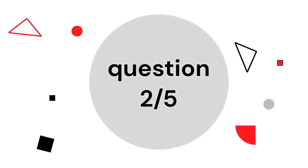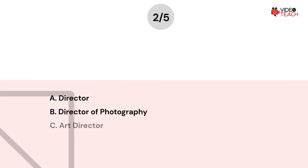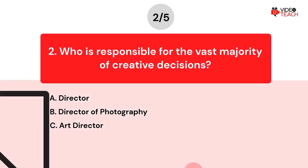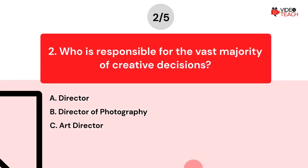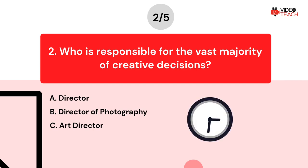Question number two. Who is responsible for the vast majority of creative decisions? Option A: Director. Option B: Director of photography. Option C: Art director. Now you have about 15 seconds to think about your answer.